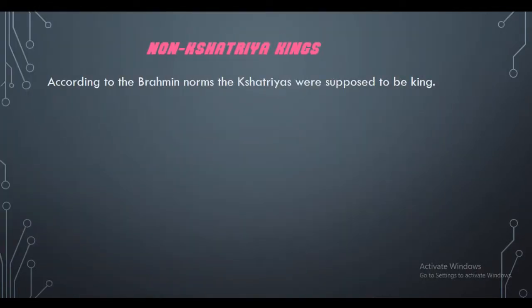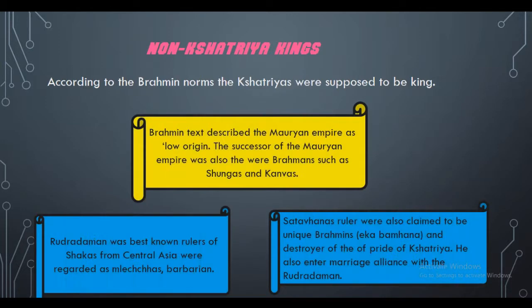Now we are going to discuss non-Kshatriya kings. As mentioned in the Brahmins' law book, anyone becoming a king should have a Kshatriya background. However, we find that some people did not obey these rules. We will look at three different examples. The first is the Mauryan Empire, whose rulers did not have a Kshatriya background — some kings came from very low castes. Also, many successors of the Mauryan Empire were from the Brahmin caste, such as the Shungas and Kanvas, showing contradictions in people following the rules made by the Brahmins.